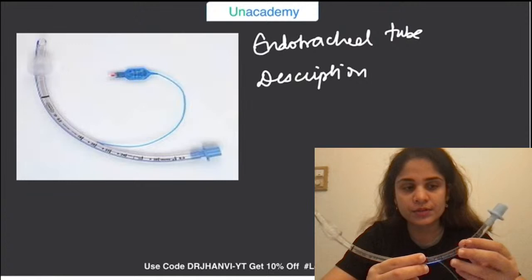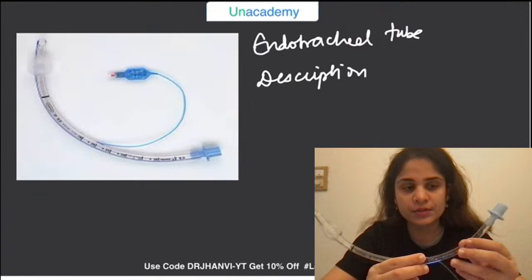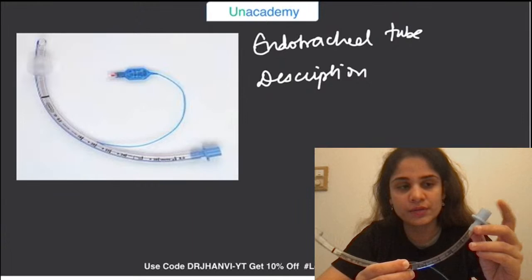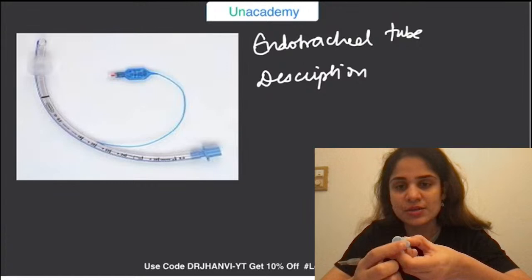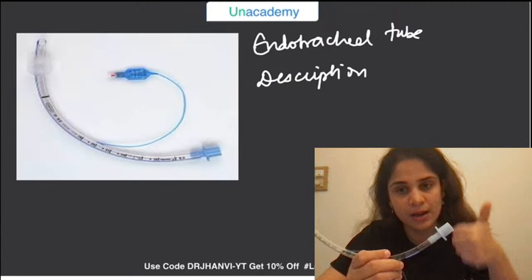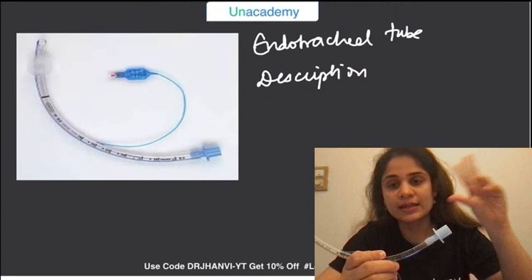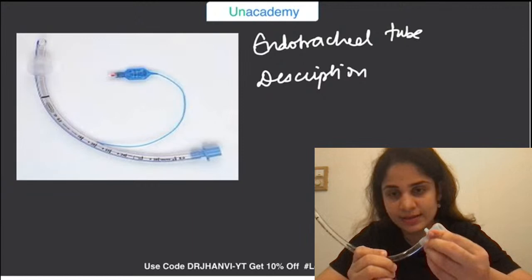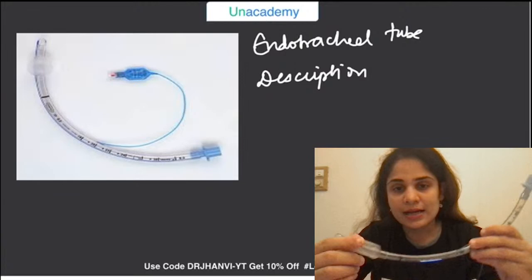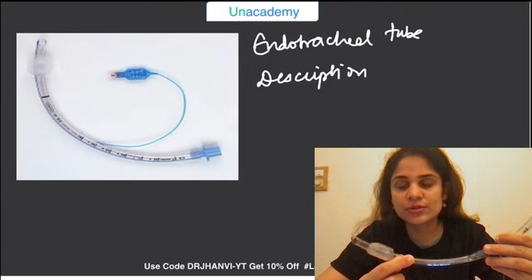After the universal connector, you will see the body of the endotracheal tube and then the end of the endotracheal tube. The specific thing we need to discuss is the end of the endotracheal tube — the distal end. So you can see over here there is a bevel end. Can you see the bevel end of the endotracheal tube? And then on the other side we have a hole.